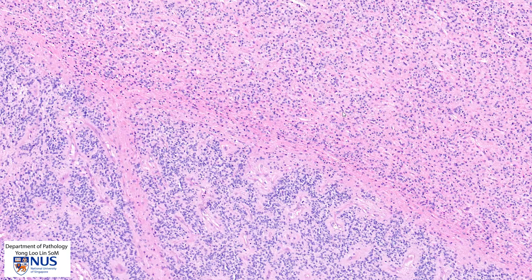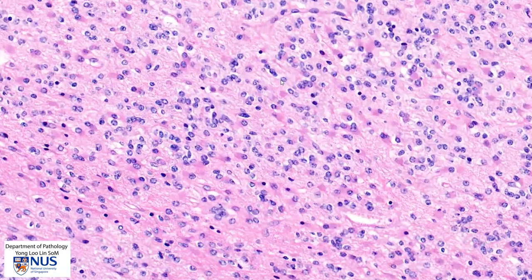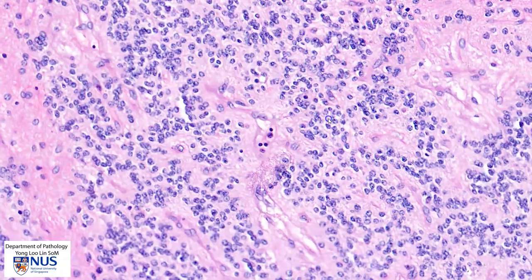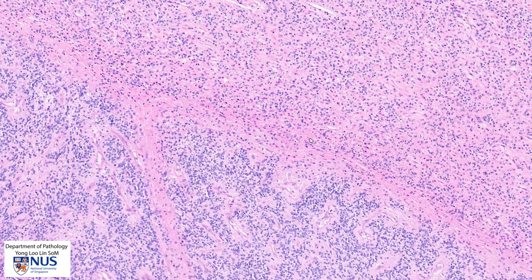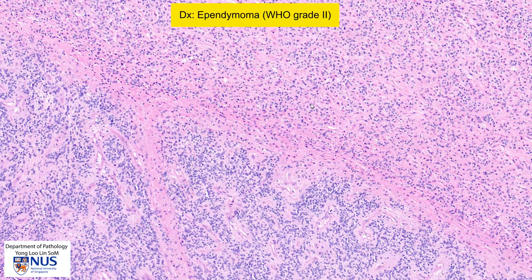In summary, we have here a low-grade glial tumor comprising round to oval cells with very uniform nuclei containing speckled chromatin, showing some perivascular pseudorosettes. There are no features to suggest a high-grade tumor, such as necrosis, nuclear pleomorphism, or mitotic figures. This is therefore a low-grade, WHO grade 2 ependymoma.